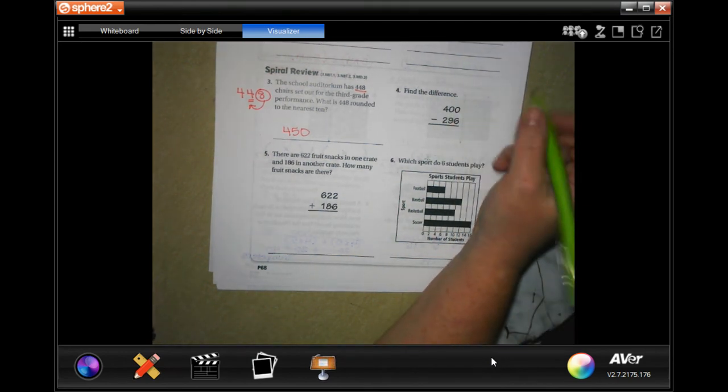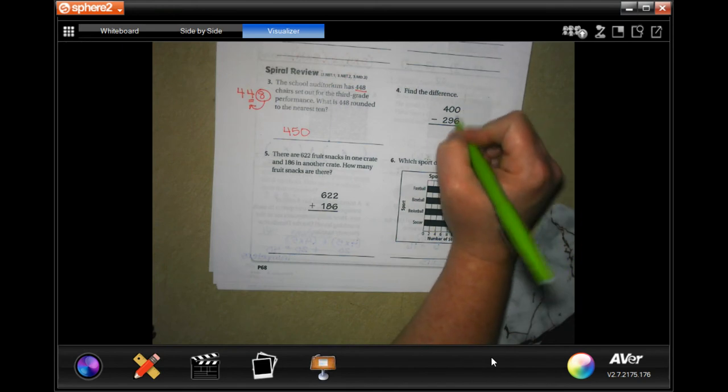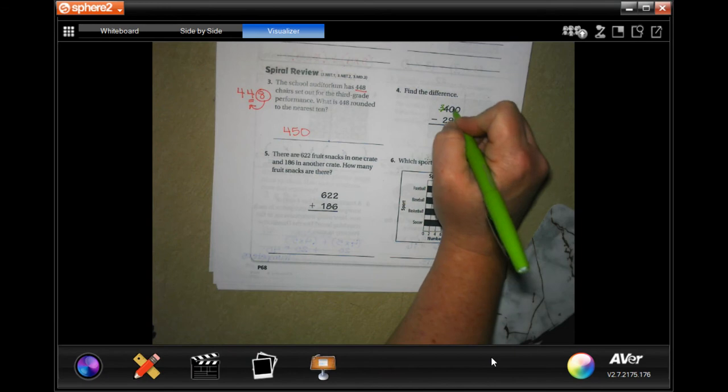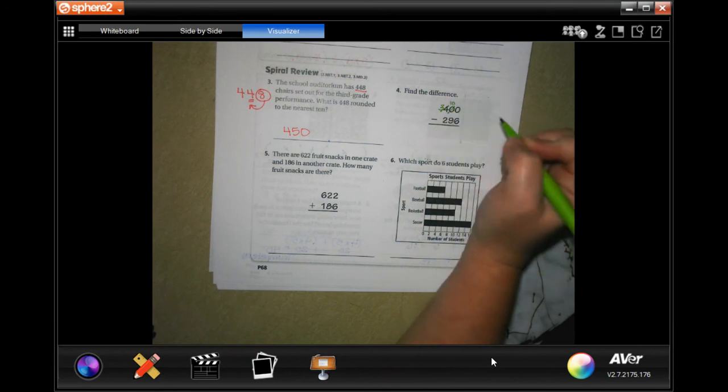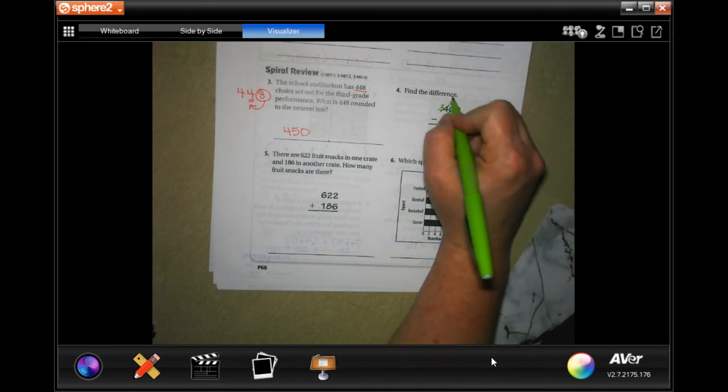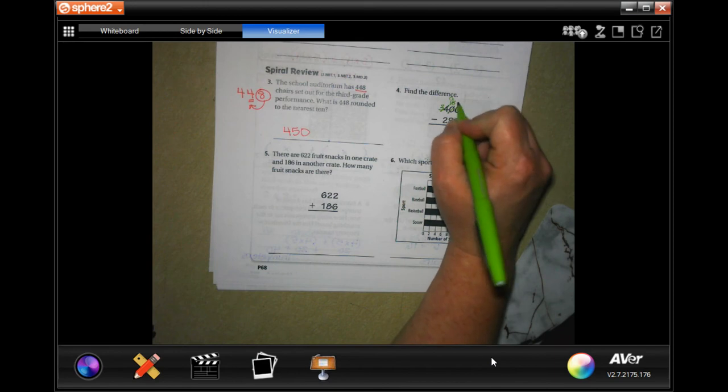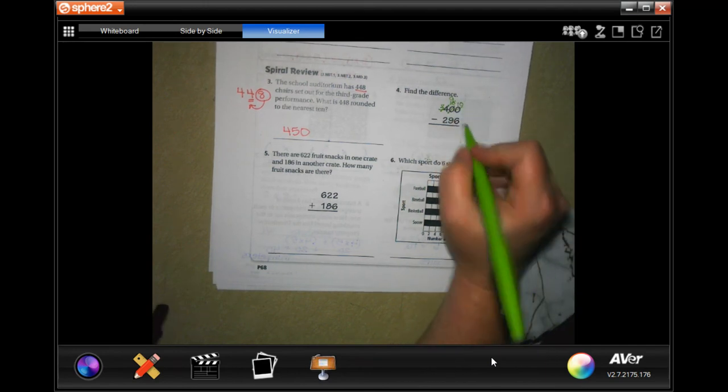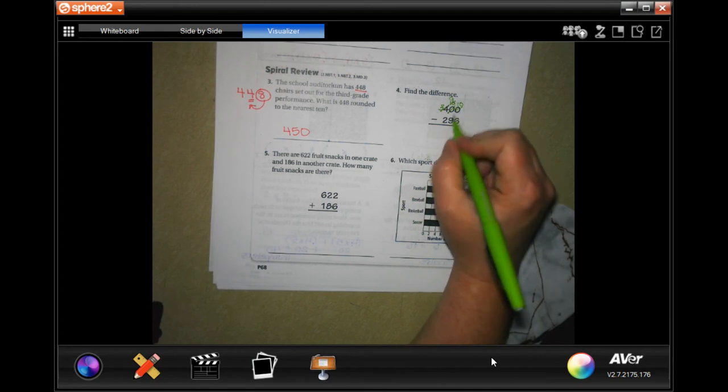Zeros can't take away anything, so I'm going to go all the way over. I'm going to make that a three, that makes this zero a ten, but I need to borrow one of those. That's a nine now and that's a ten. So 10 minus 6 is 4, nine minus nine is zero, and three minus two is 1.